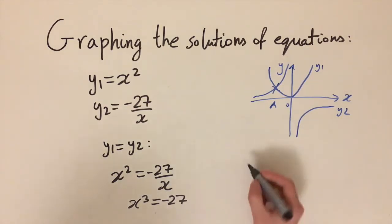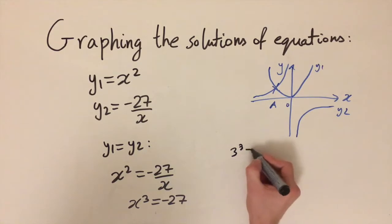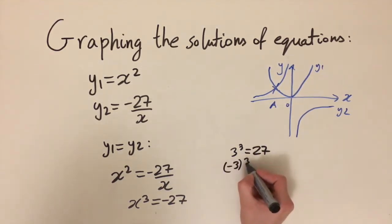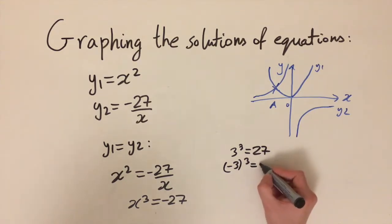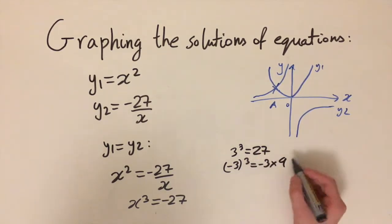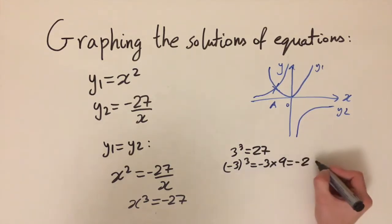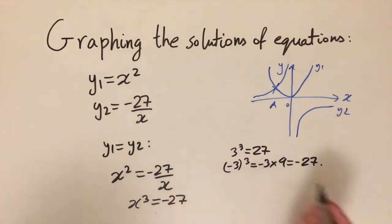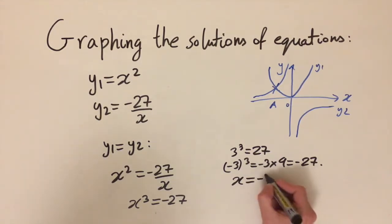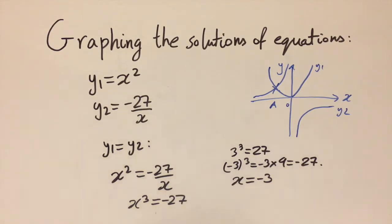We know 3 cubed equals 27, so we try minus 3: (minus 3) cubed equals minus 3 times 9, which is minus 27. So by inspection, x equals minus 3 is the x-coordinate of the intersection. Normally you'd use more standard techniques, but here we spotted the solution directly.